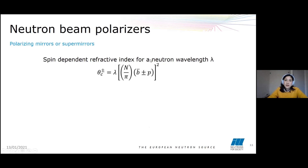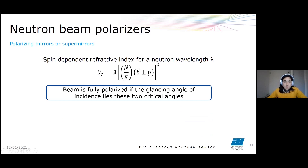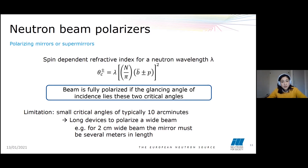This spin-dependent refractive index sets the limits — the critical glancing angles — by which the beam will be fully polarized within the mirror. A limitation of mirrors is that they have small critical angles, typically 10 arc minutes, which means we need long devices to polarize a wide beam. For example, for a beam that is two centimeters wide, the mirror must be several meters in length.